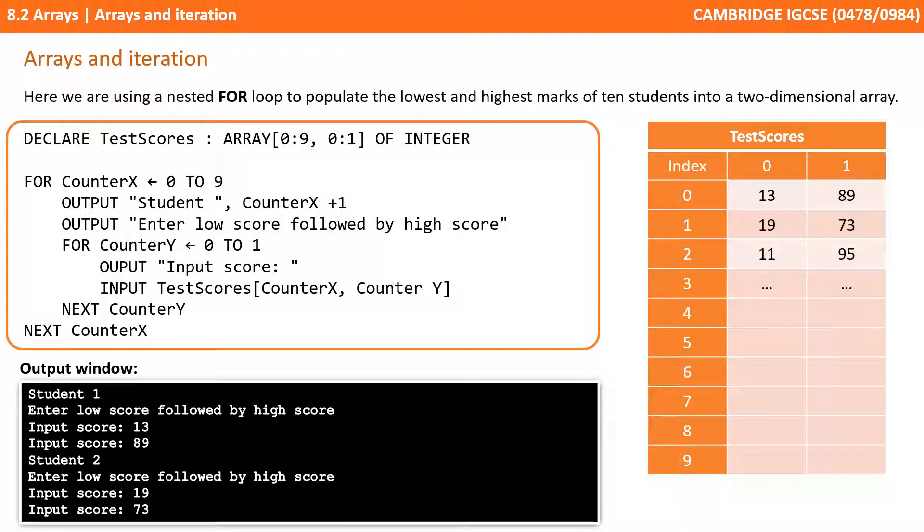You can see we've declared a two-dimensional array at the top of the screen. Then we're using two counters: for counter x 0 to 9, that's for each row in the table, for each student. We output the number of the student and a prompt, and then we've got an inner for loop that's only looping twice from 0 to 1 because there's only a low and a high score, and we get them to input the score.